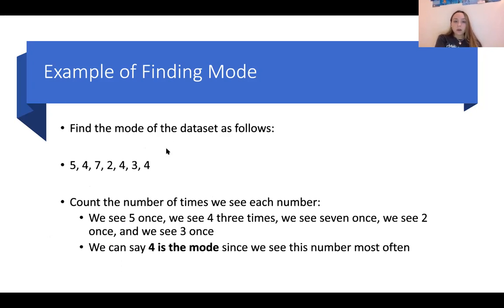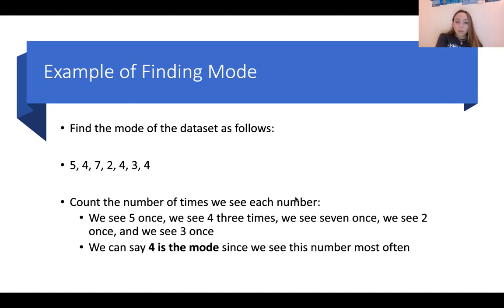For the mode, the data set is 5, 4, 7, 2, 4, 3, 4. The mode is the most frequent value in the data set. We count how many times we see each number: 5 appears once, 4 appears three times, 7 once, 2 once, and 3 once. So 4 is the mode since we see this number most often.